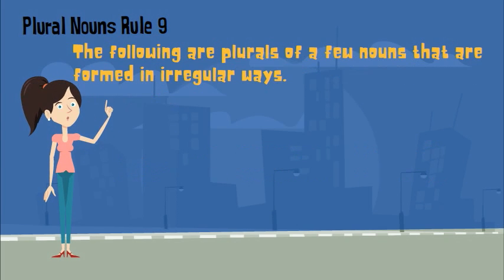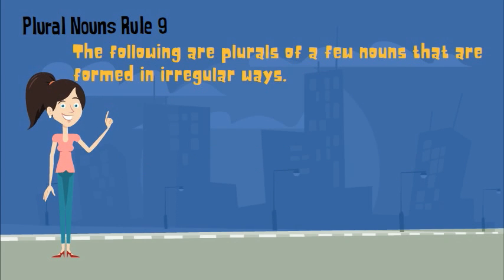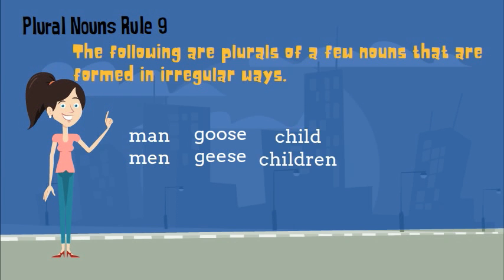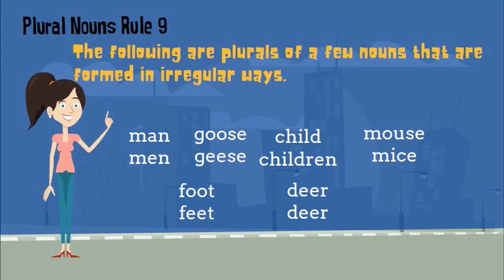The following are plurals of a few nouns that are formed in irregular ways, so you wouldn't add an S at all. If you look at man, the plural would be men. Goose would become geese. Child would become children. Mouse becomes mice, foot becomes feet, and deer remains deer.